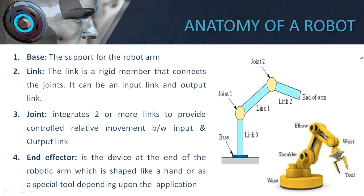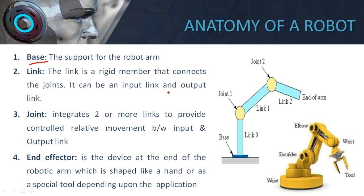There are four basic parts which are very important for you to know: base, link, joint, and end effector. These four parts sum up the anatomy of a robot. It gives an overview of the different parts of a robot. First is the base. A robot, if it has to be installed at one particular position, should have a base wherein all the other parts are mounted.